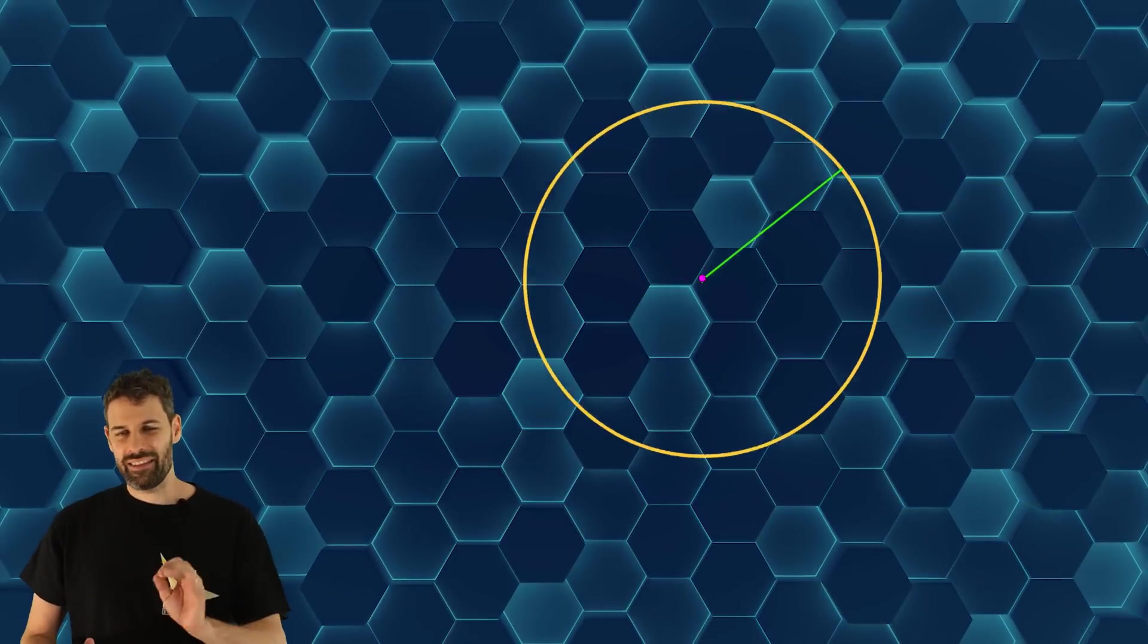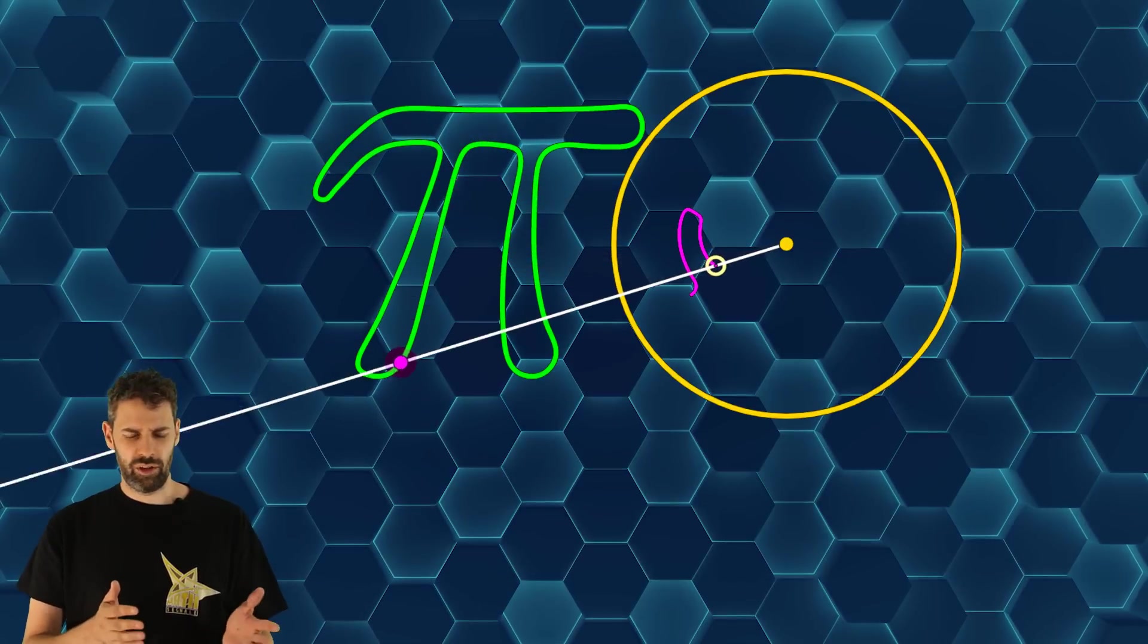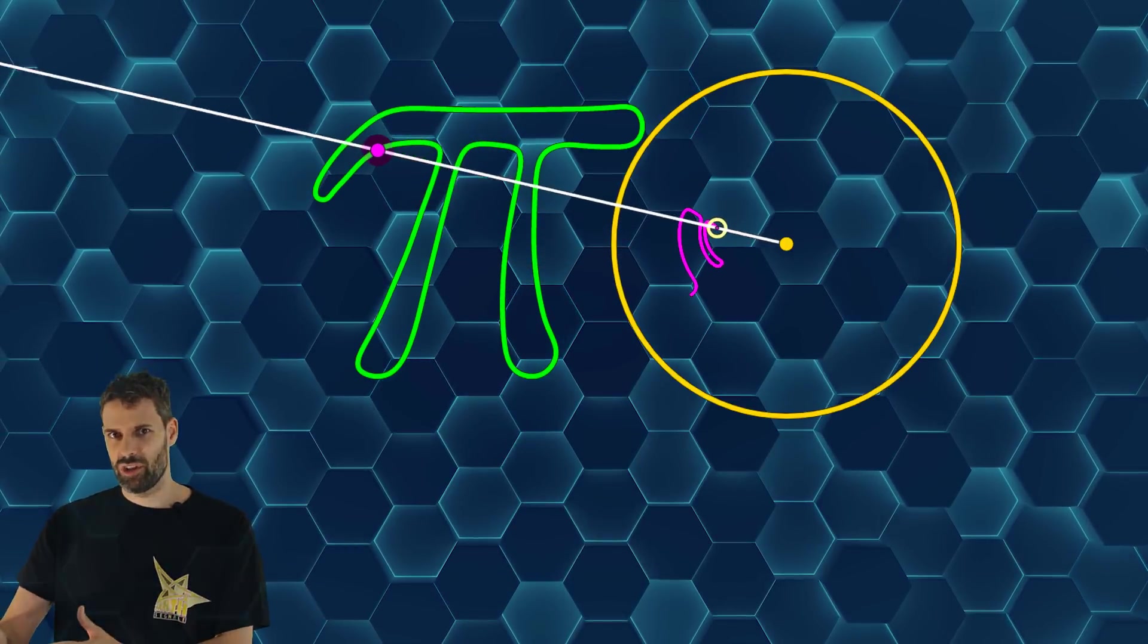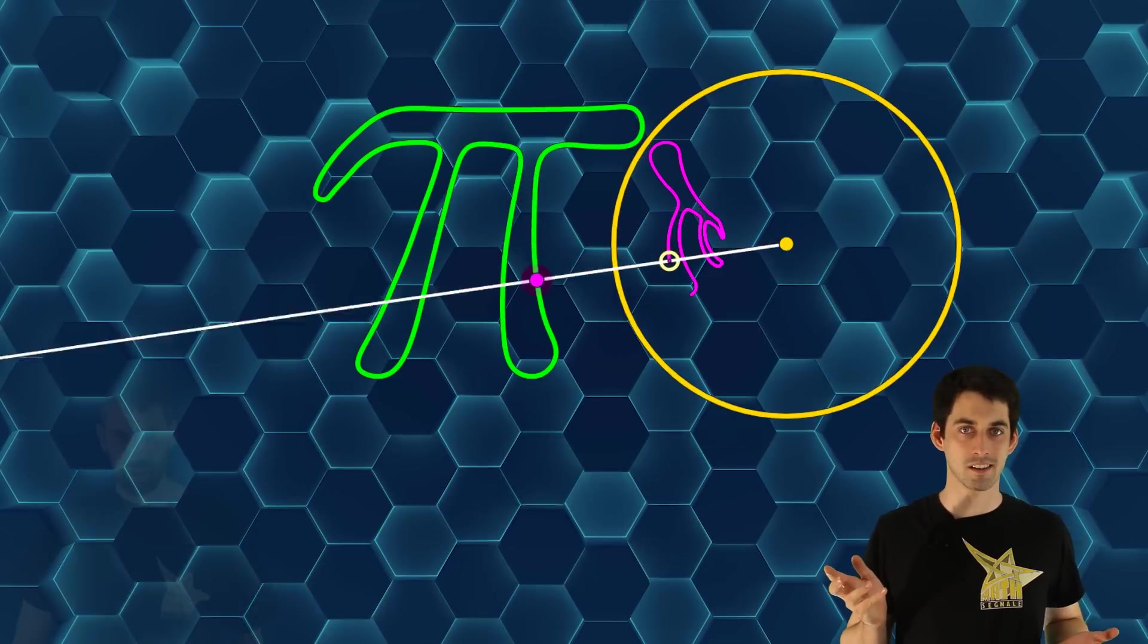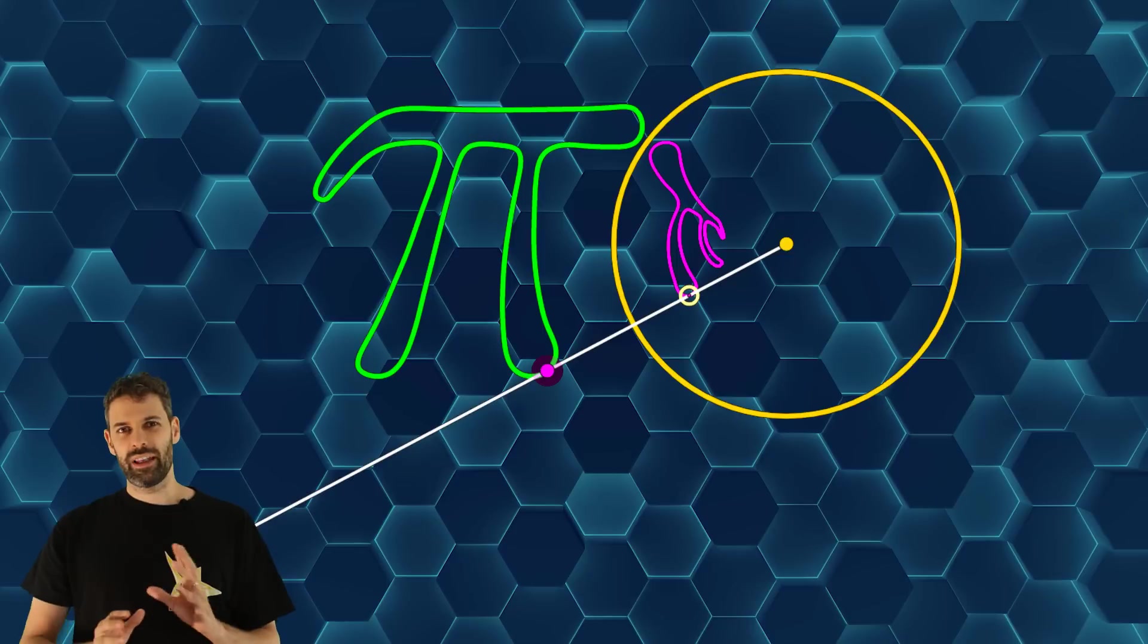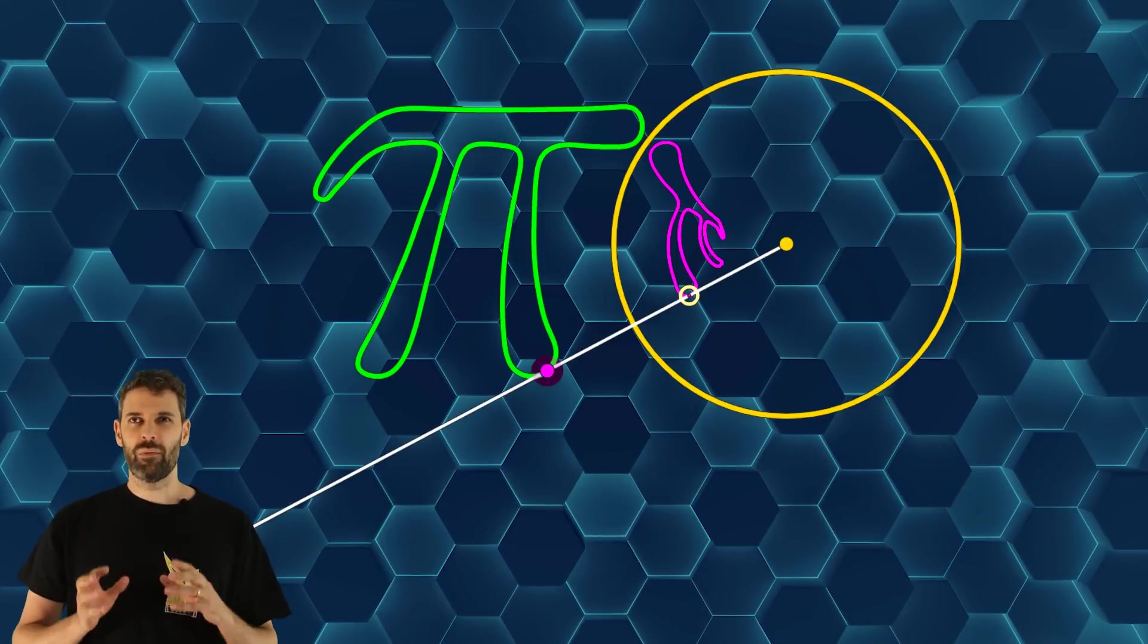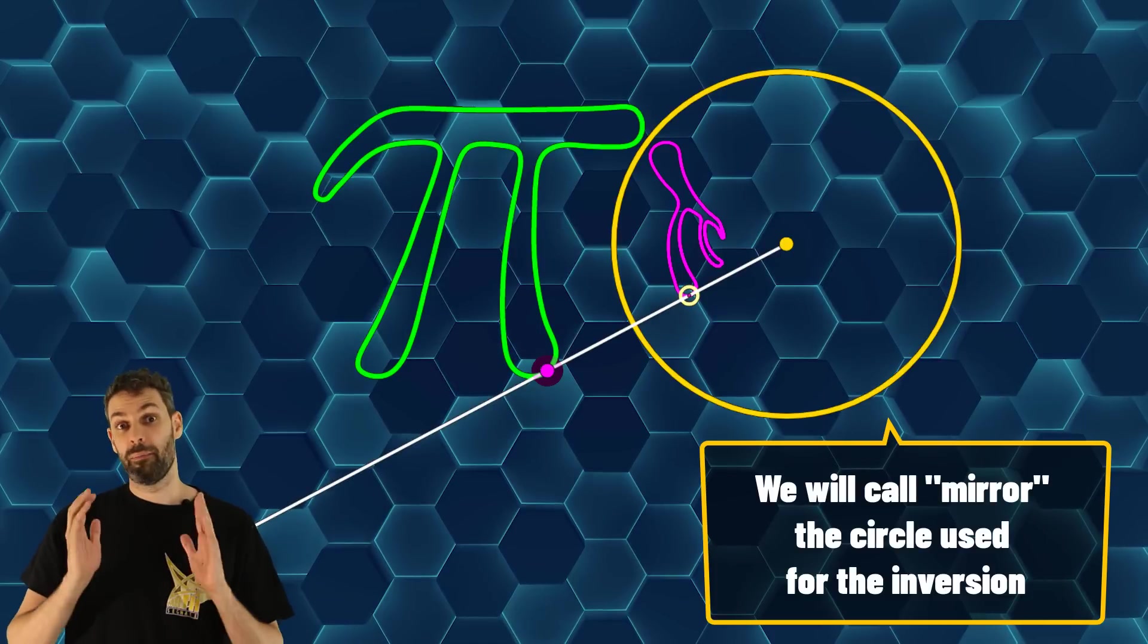So, let's go for other properties. First of all, we can transform images, not only points. Simply, we transform every point of this image. Amazing! It looks like a distorted mirror. Right! The circular inversions almost work like a mirror. So, okay, we will use this term and we will call the circle mirror.